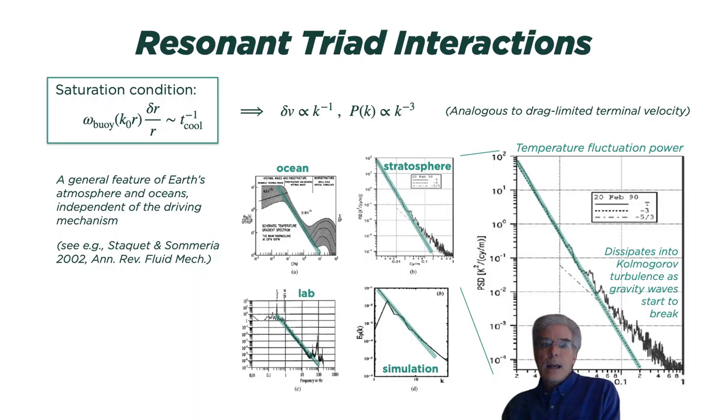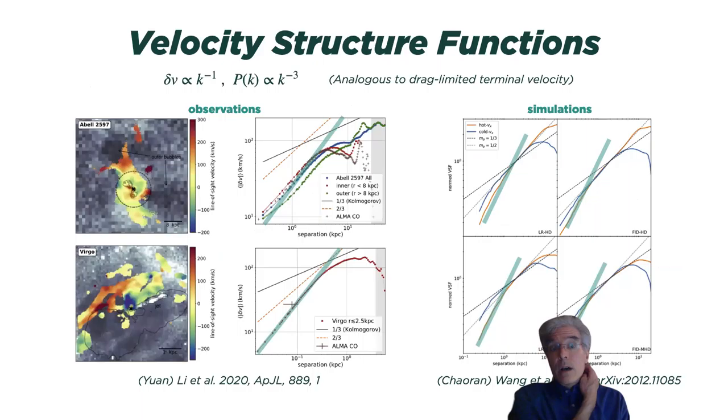The thing is this might already have been observed. On the left are some velocity structure functions measured in cluster core nebulae by Yuan Li, where you're looking at the nebulae as tracer particles for what the hot medium might be doing. And in two of the three clusters she looked at, Abel 2597 and Virgo, the velocity power spectrum ends up going like k to the minus one over a pretty significant range in k, steeper than k to the minus one-third expected from Kolmogorov by quite a bit.